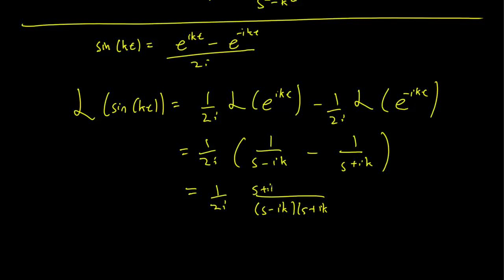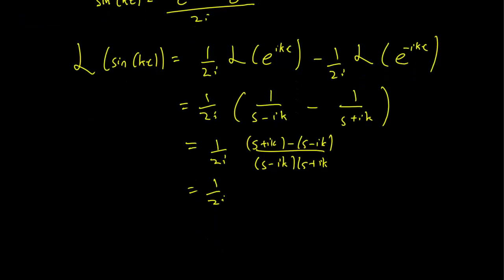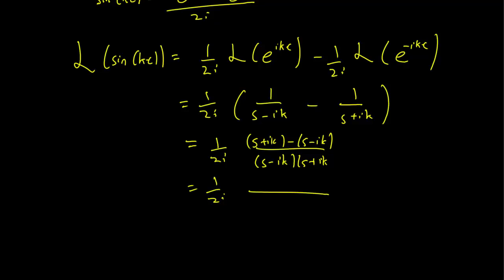s plus ik minus s minus ik. And this will be equal to, the bottom is again a difference of squares, but s squared minus ik squared. On the top you get 2ik.